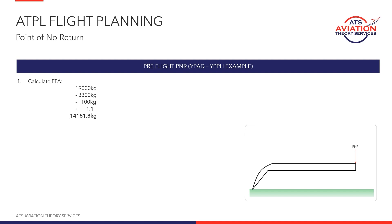Step 2 is to estimate the PNR position. We put 14,181.8 kilos into the formula, remove 1,600 kilos for the climb allowance, and divide by SAR out plus SAR home. Given this is a normal operations PNR, it's 9.5 out because we're cruising at Mach 0.79, and SAR home is also 9.5 cruising back at 0.79. If this were a depressurised scenario, we'd use 12.5 on the way back. But for normal operations, it's 9.5 plus 9.5.